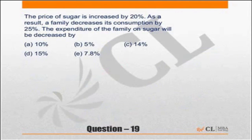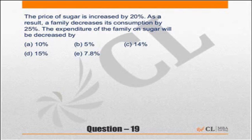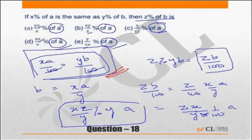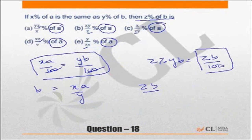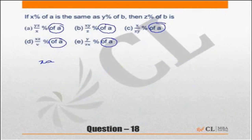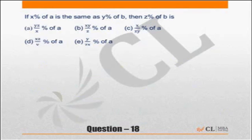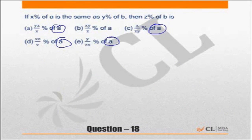This question should not be a problem now. None of the choices have A, so I will not worry about A. In the previous question, just to make it clear again, all the choices have A, and all the choices have X.